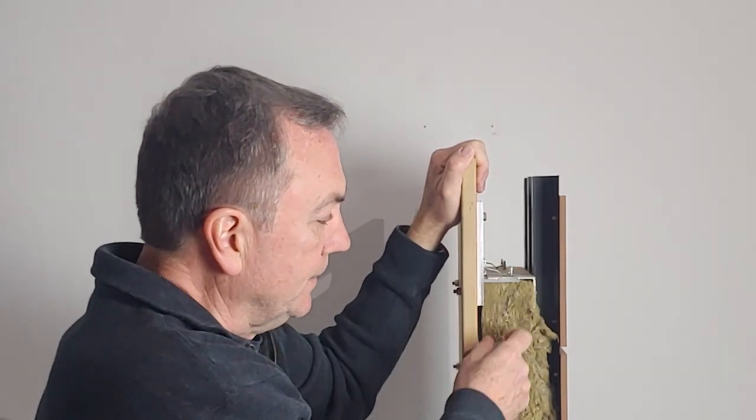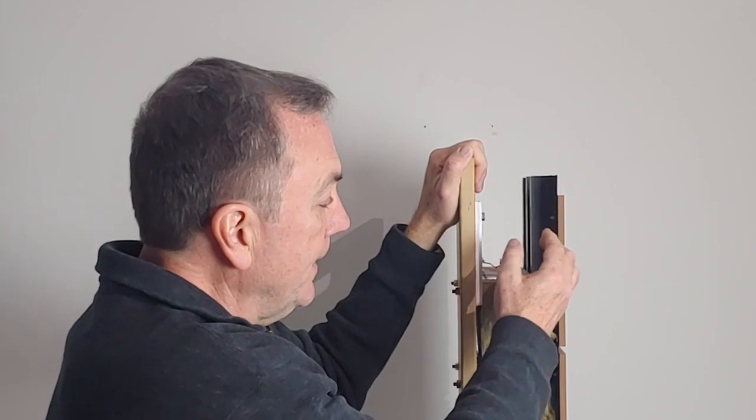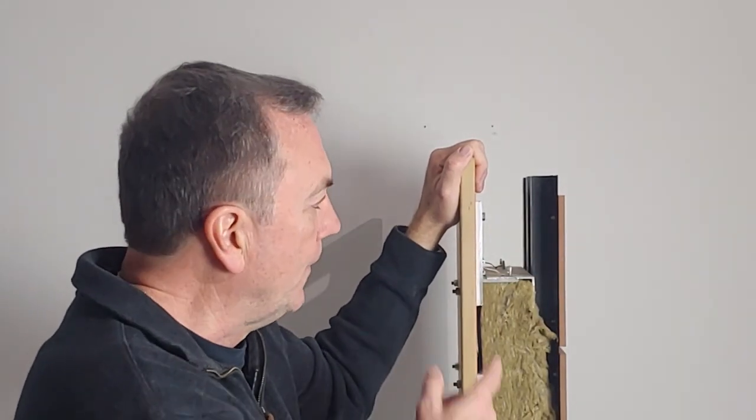Then it has the insulation, the hat channels over it, and then this. Although this does have a hat channel type of bracket here.